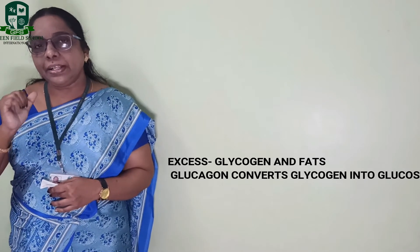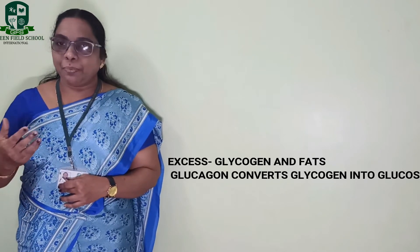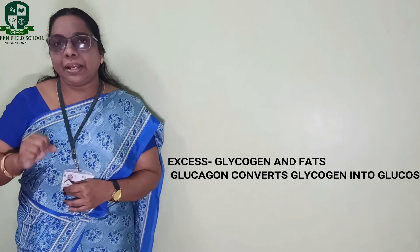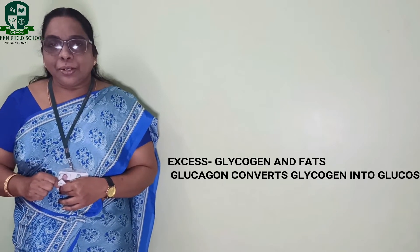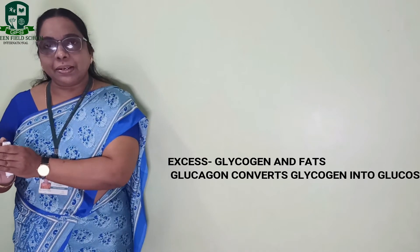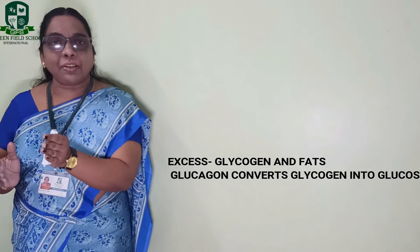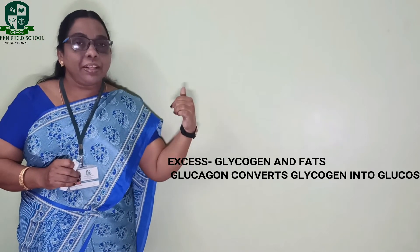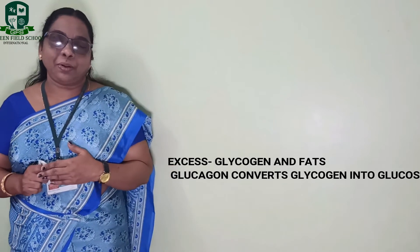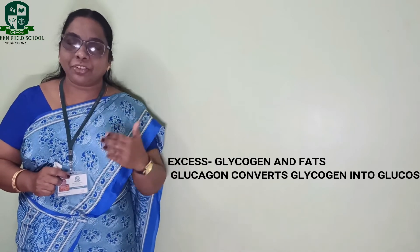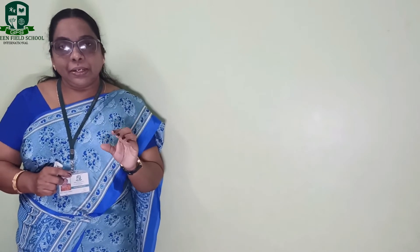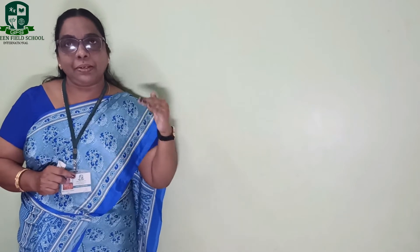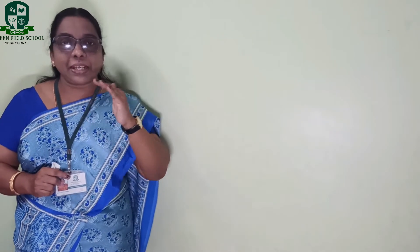During starvation or fasting, when the body is not getting enough glucose because you are not taking food, the excess glucose previously stored as glycogen is converted back to glucose with the help of the hormone glucagon. So with the help of glucagon, glycogen is converted back to glucose. The textbook focuses primarily on insulin as the first hormone.